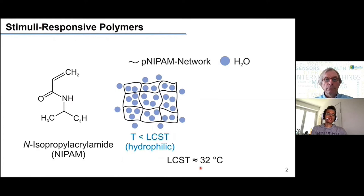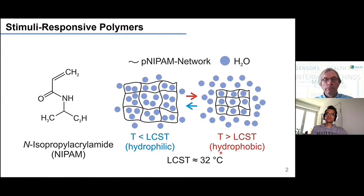What's very interesting about this material is that it has a lower critical solution temperature of about 32 degrees Celsius. If you go above this temperature, the material characteristics drastically change: the material goes from a hydrophilic state to a hydrophobic state, meaning it repels water. As a result, the water leaves the system and the polymer network shrinks significantly. If you cool your sample back down, the material becomes hydrophilic again, swells with water, and expands.